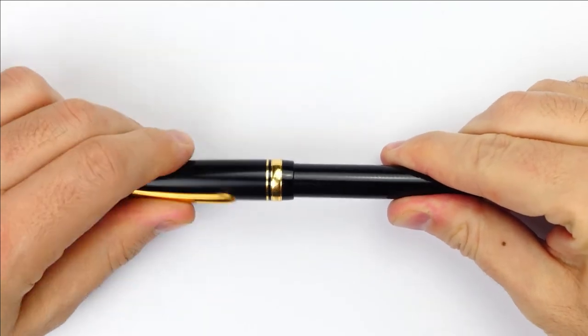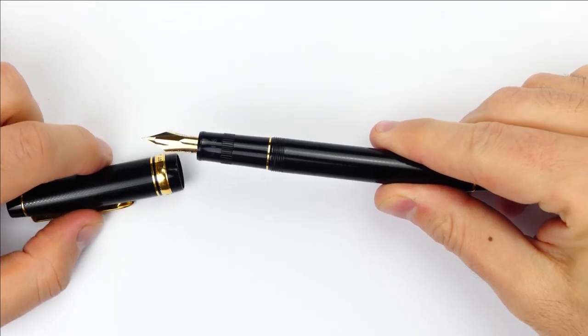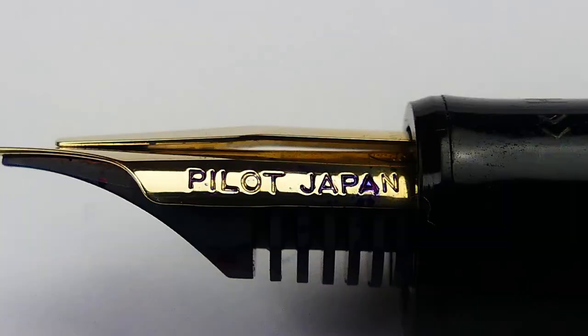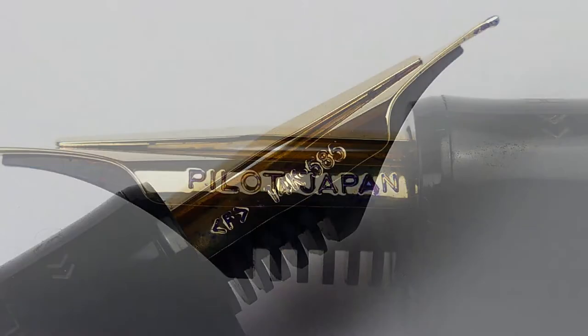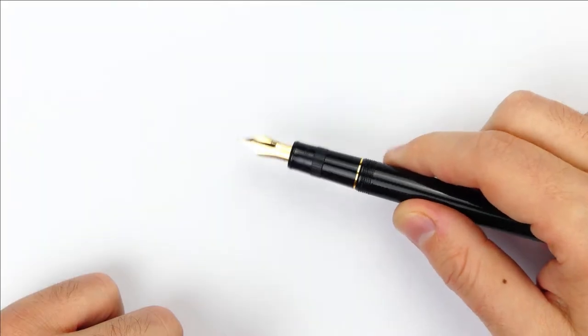The cap twists off in one turn and a quarter revealing this 14k gold adjustable nib. As you can see, there is this little tension bar on the top of the nib, which has Pilot Japan engraved on one side and F for fine with 14k 585 to indicate the amount of gold on the other side.